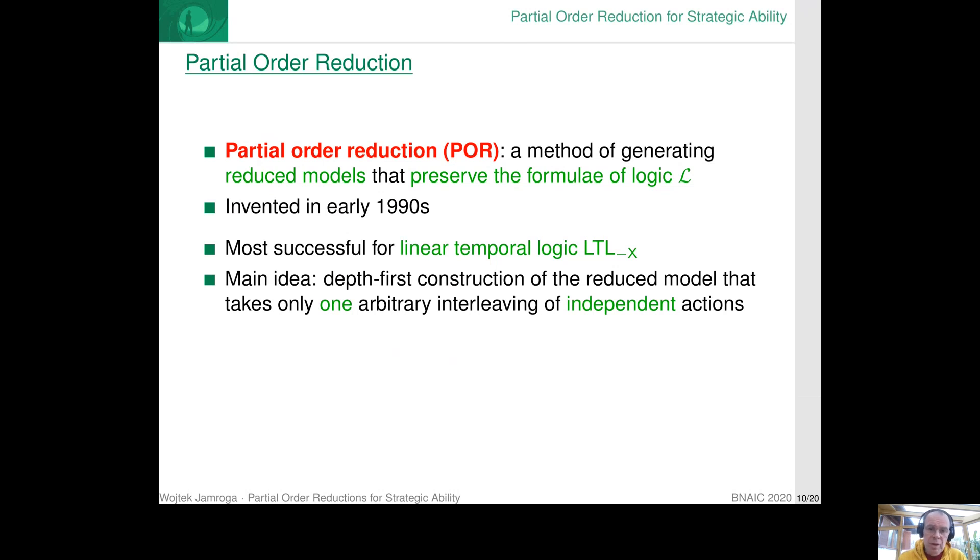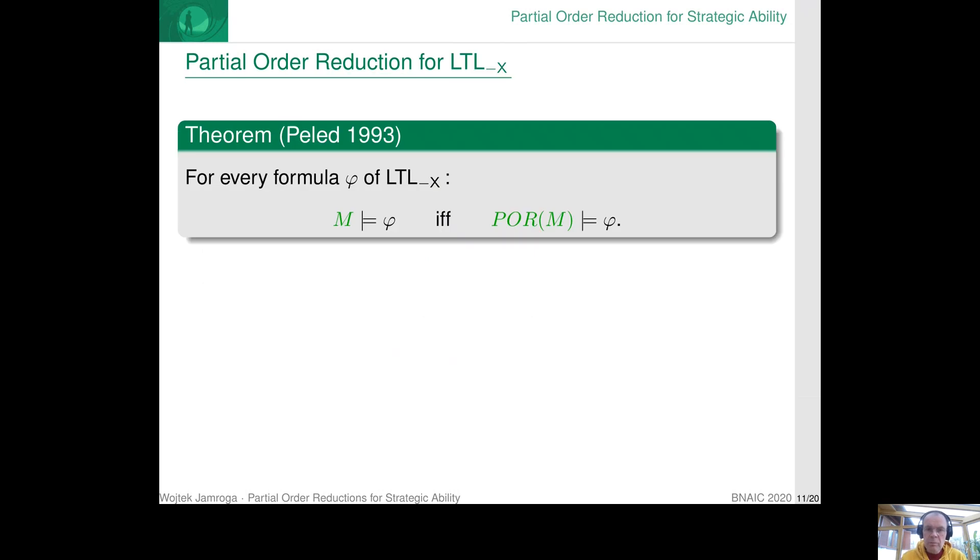What does that mean? In case of linear temporal logic, that means that if we have two possible interleavings of independent actions, it's typically enough to keep only one of the paths in the model, and the other one can be omitted.